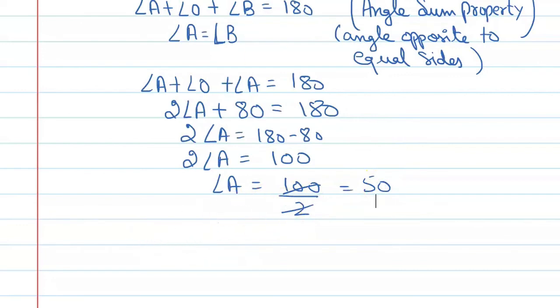So, we can write our final answer here. Therefore, angle OAB is equal to 50 degrees, and the correct option is D. Thank you.